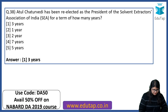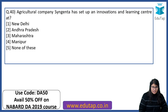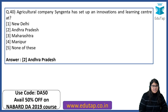The Solvent Extractors Association of India was formed in which year? The answer is 1963. Agricultural company Syngenta has set up an Innovations and Learning Centre at which place? The right answer is Andhra Pradesh.